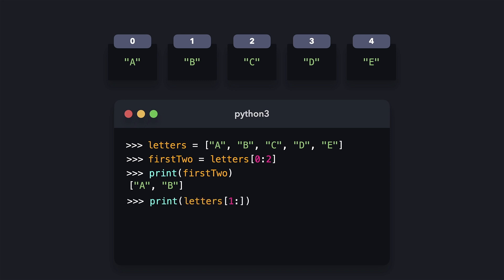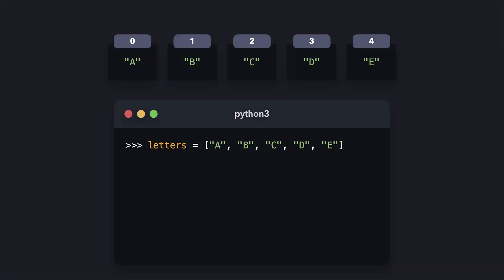If we only specify a beginning index, we're slicing from that index all the way to the end. And if we only specify an end index, we start from the very beginning until that index. You can also specify negative indices, which is useful if you don't exactly know the length of the list. Let's say that we want a copy of the letters list but with the first and last elements cut off. We know the last element is on index minus 1 and the first element is on index 1, so we slice from start index 1 to end index minus 1.